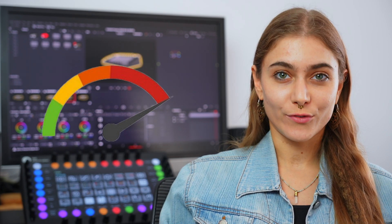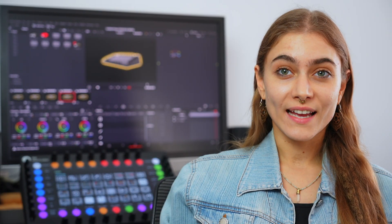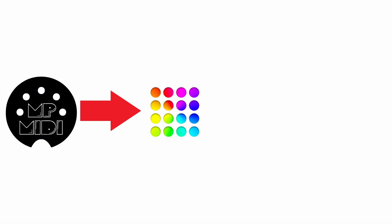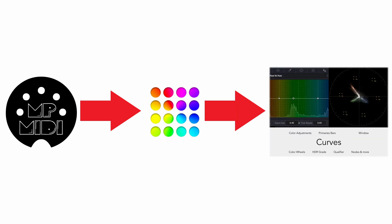If you've been searching for a way to speed up your workflow and make your color grading more intuitive, you're in the right place. MIDI Grade is an incredible tool that takes MIDI messages and translates them into precise mouse movements, giving you hands-on control over key color grading parameters, all from your MP Controller. Let's jump right into the action with a live demo.